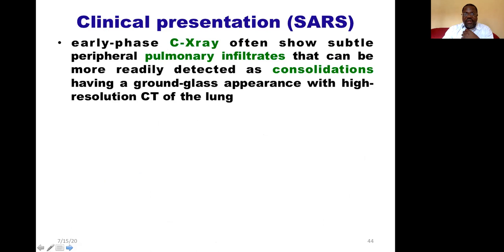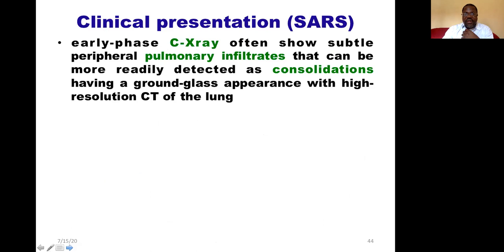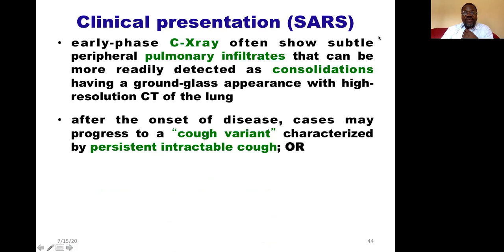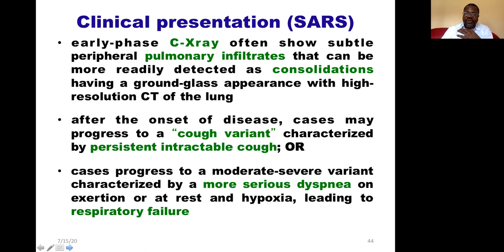The typical respiratory phase starts two to seven days after the prodrome. The early respiratory stage includes a dry non-productive cough with mild dyspnea. A chest X-ray often shows pulmonary infiltrate, and CT of the lung can show consolidation with a ground-glass appearance. Cases then progress to a cough variant with a persistent intractable cough, then from moderate to severe variant with serious dyspnea leading to respiratory failure requiring intubation with mechanical ventilation.